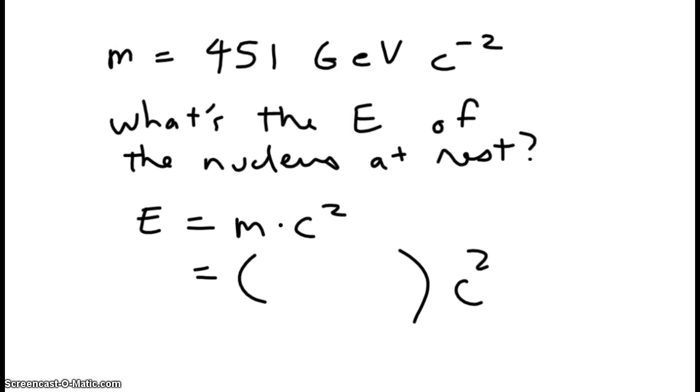And this gives us a really lovely situation. The C to the negative 2 and C squared become 1. And what's our answer? It's just 451 gigaelectron volts.